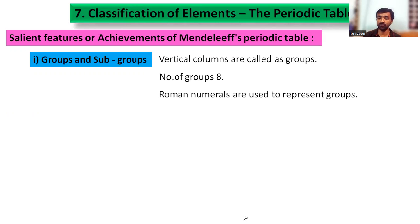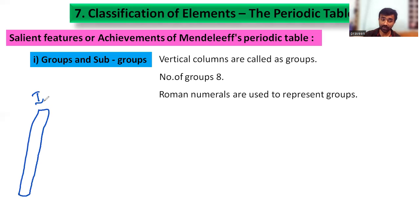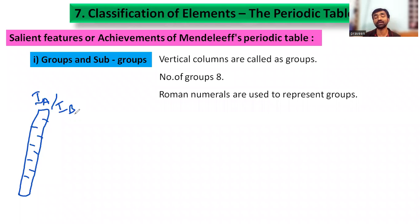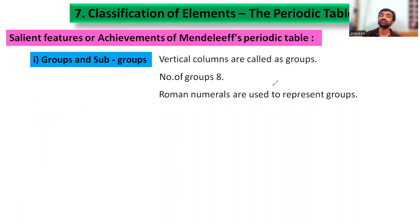For example, group number 1 is divided into subgroup 1A and 1B, where the left side is A and the right side is B. Roman numerals are assigned to groups with a subscript A or B to represent the subgroups.